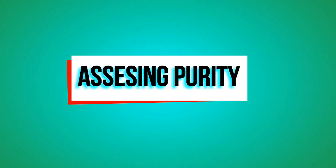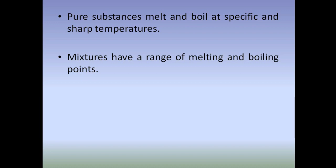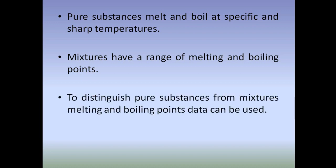The next chapter is assessing purity. As seen in the previous unit, pure substances melt and boil at specific and sharp temperatures. For example, pure water boils at 100°C, whereas water with salt or sugar added has a higher boiling point. Mixtures have a range of melting and boiling points. To distinguish pure substances from mixtures, melting and boiling point data can be used.